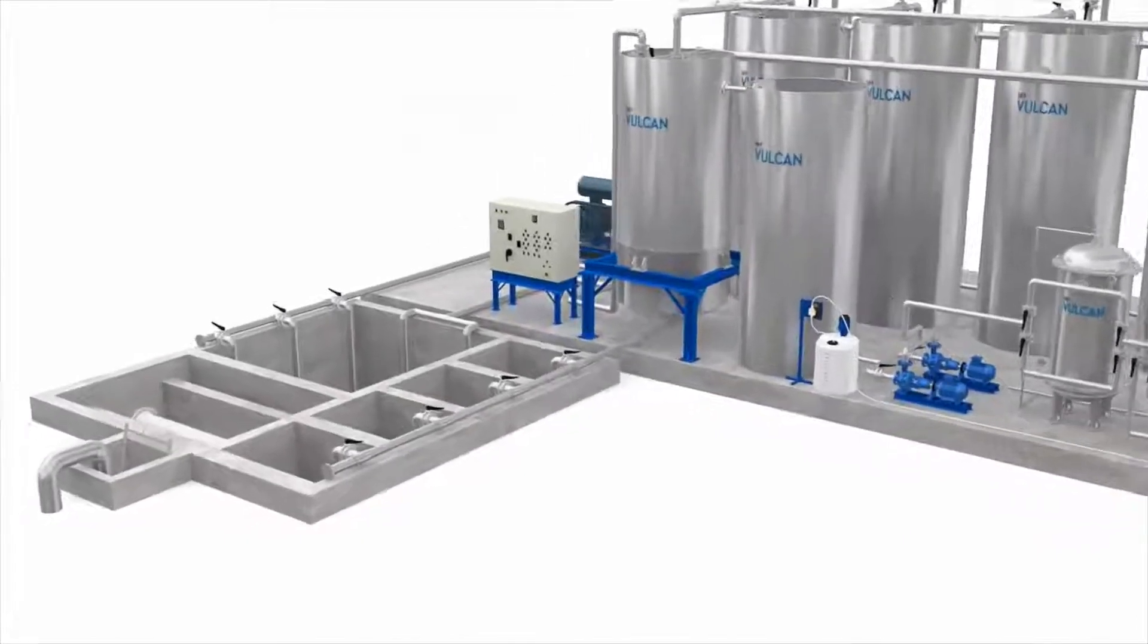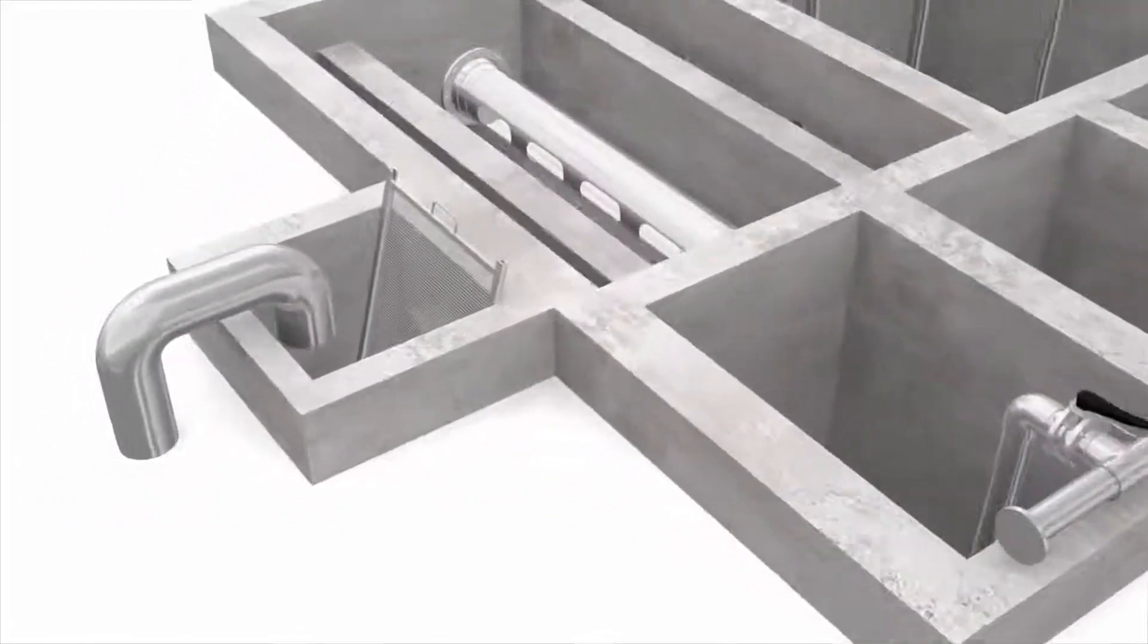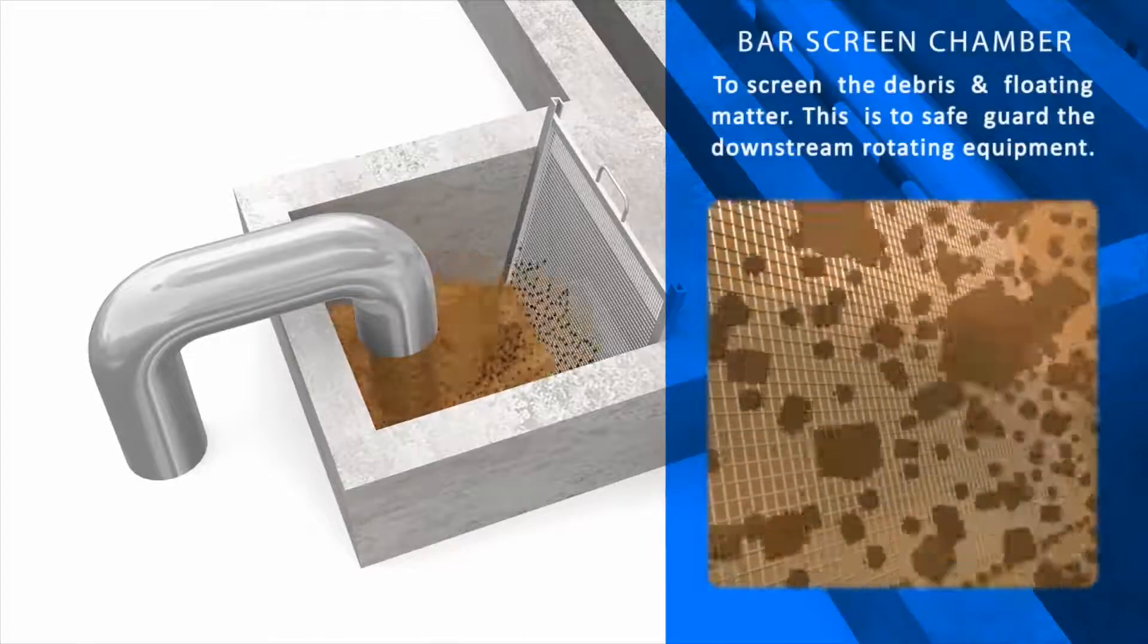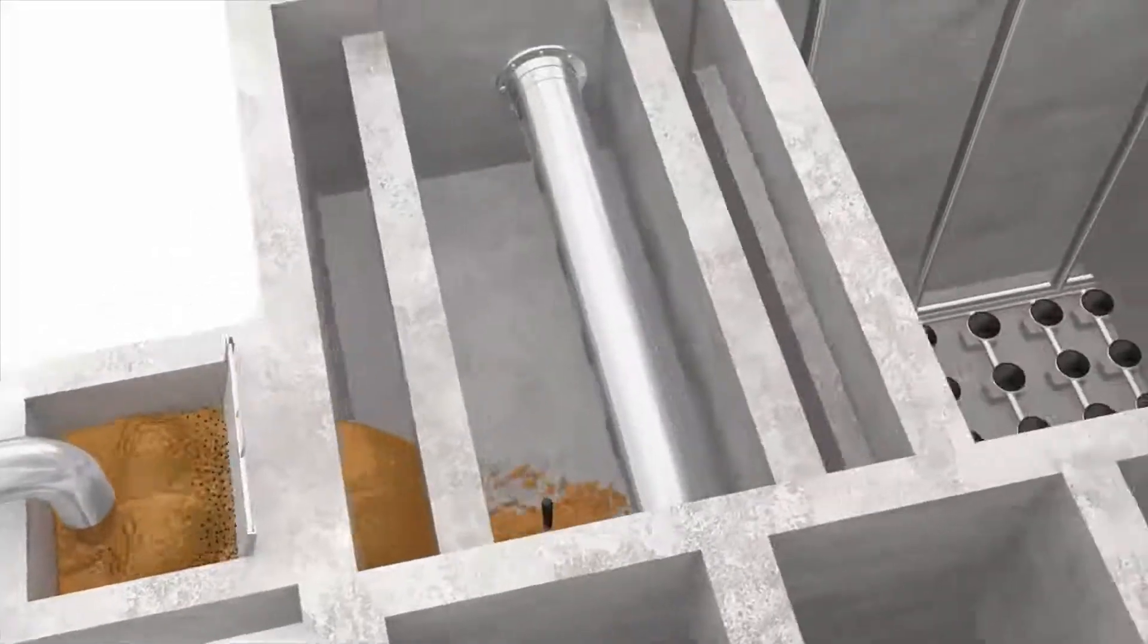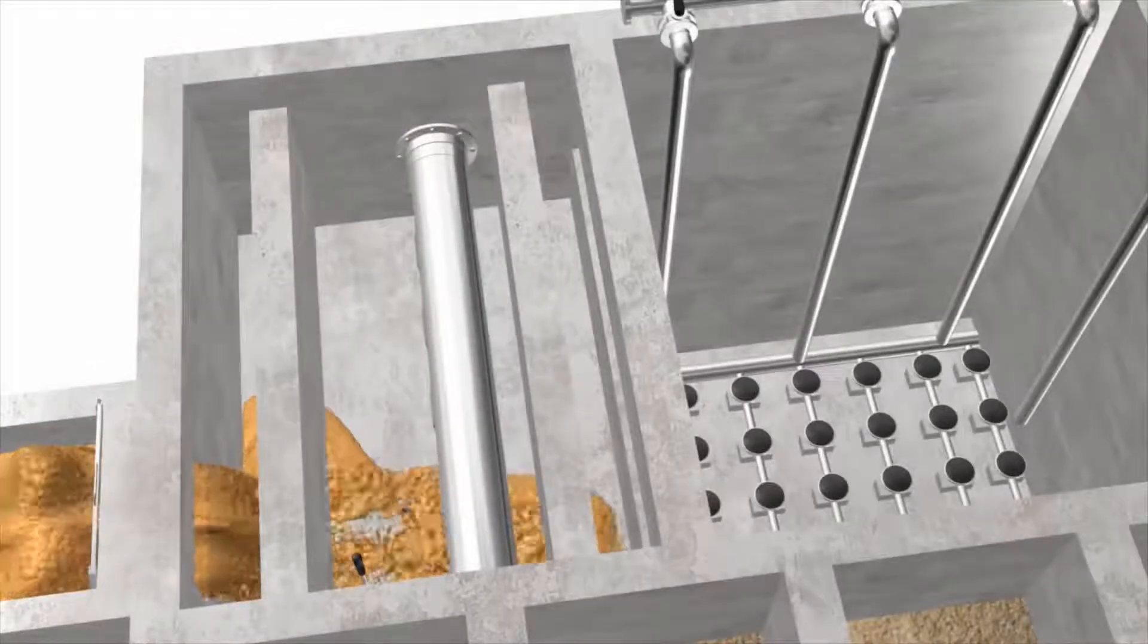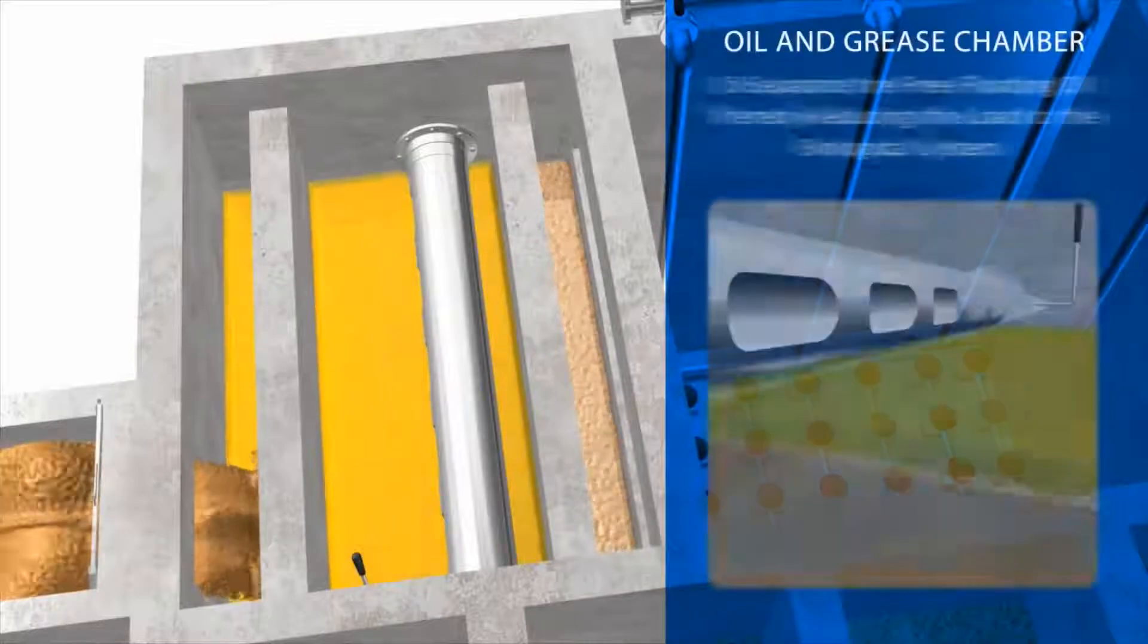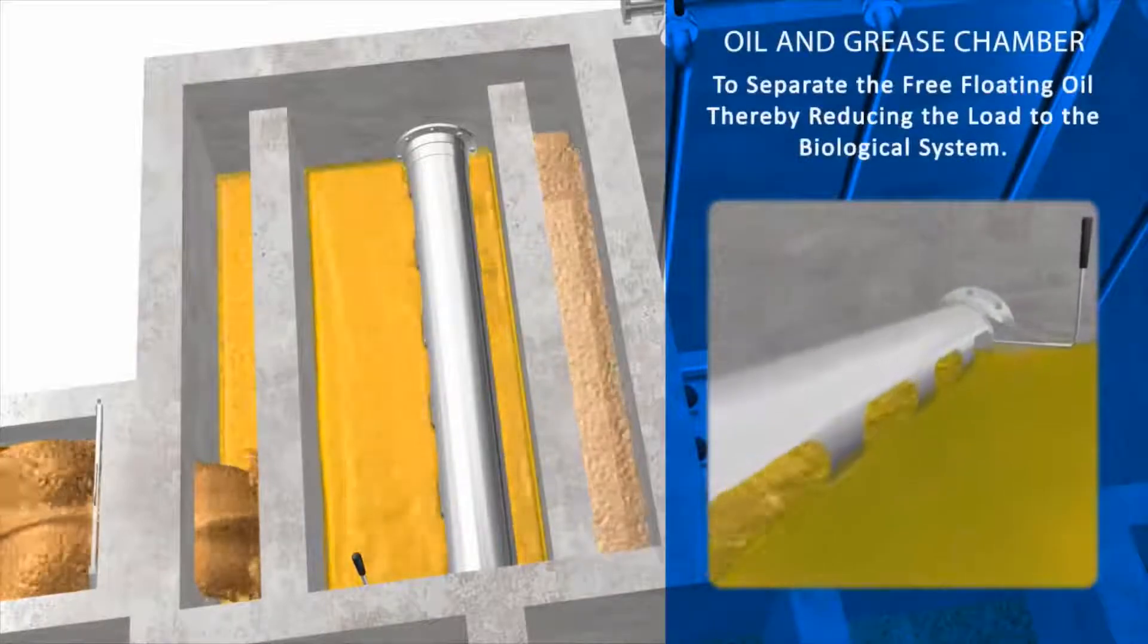The raw sewage enters the bar screen chamber where debris and floating matter are screened. It then flows into the oil and grease chamber which separates the free-floating oil, thereby reducing the load to the biological system.